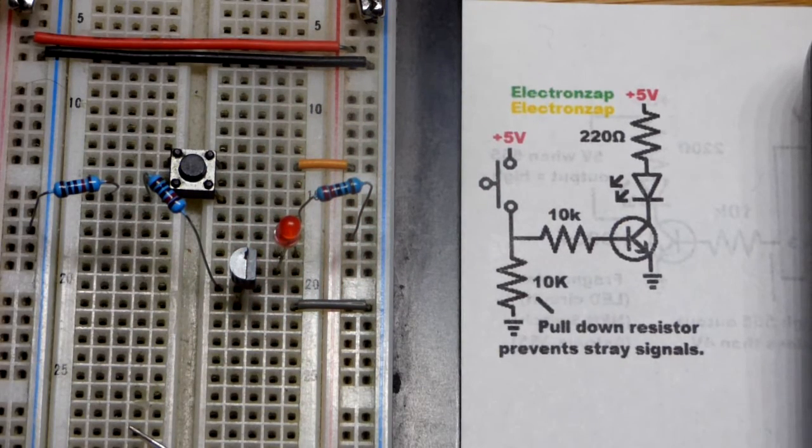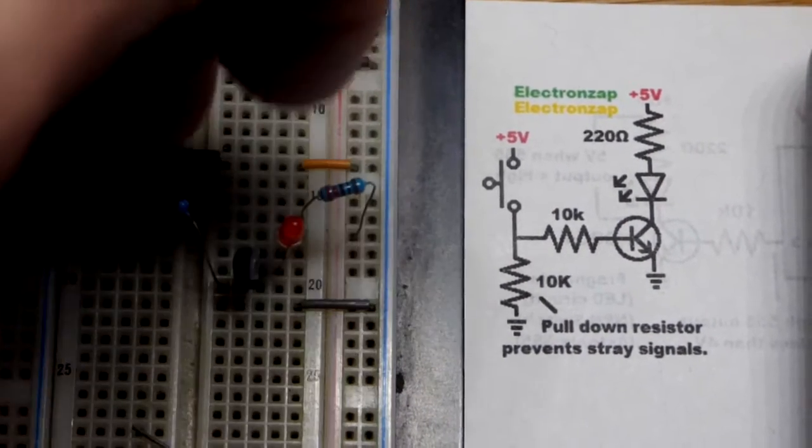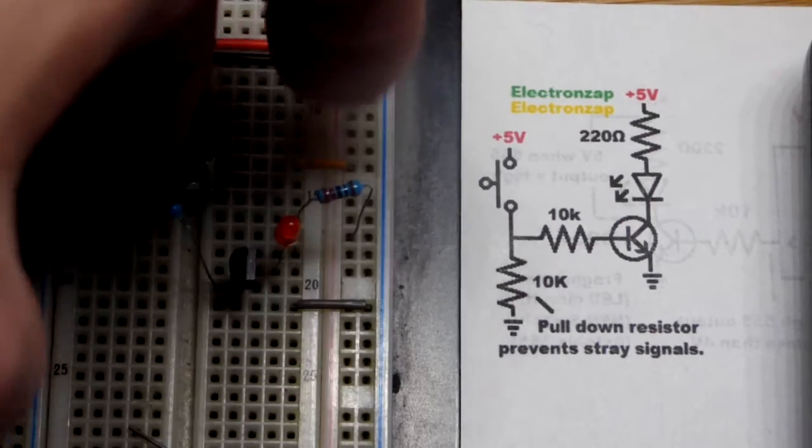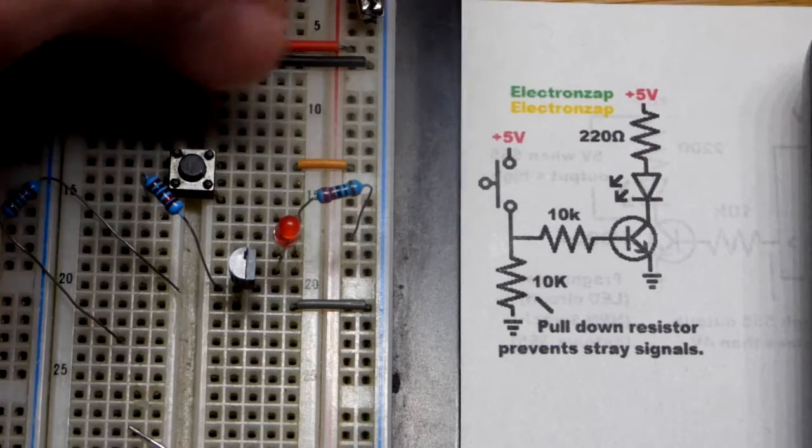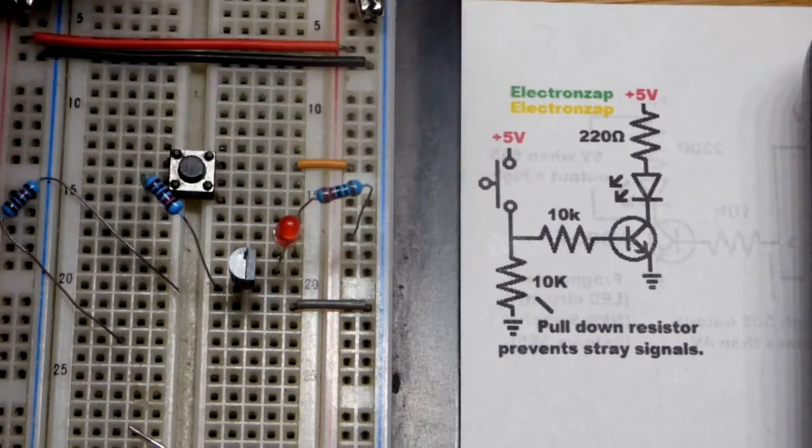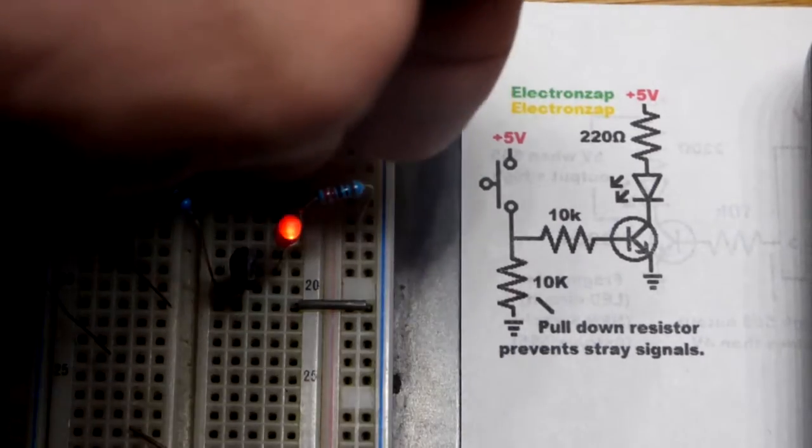The resistor there, the pull-down resistor, let's get to that right away as well. So you can see I can touch the metal there. The LED stays off, which it should, but without this resistor, the resistor otherwise doesn't really affect the circuit. But now you can see my body can actually provide a stray signal right there.